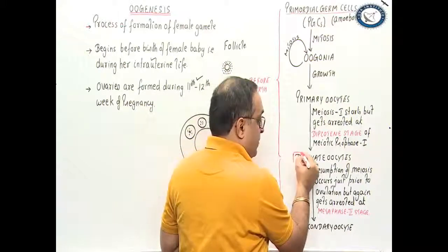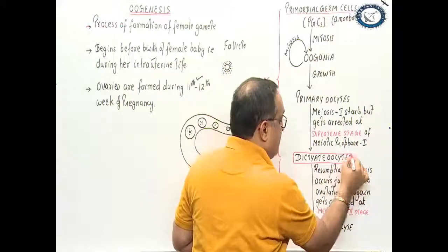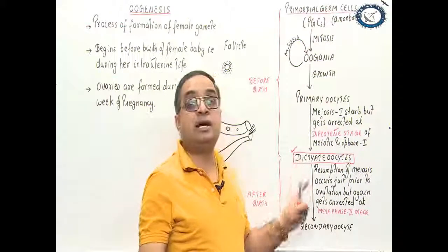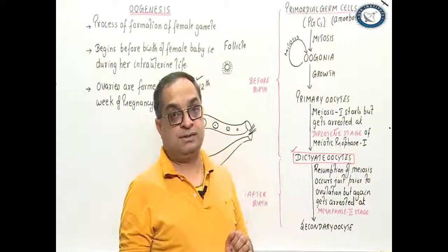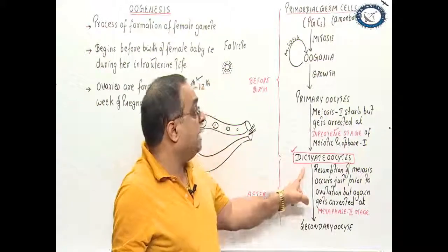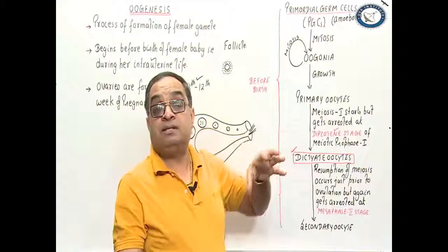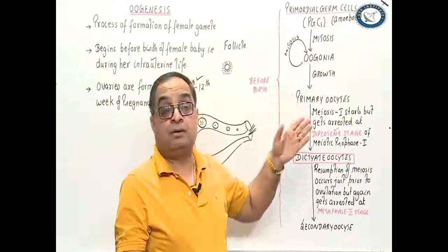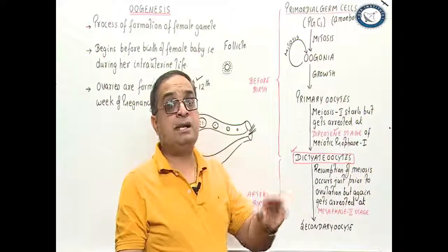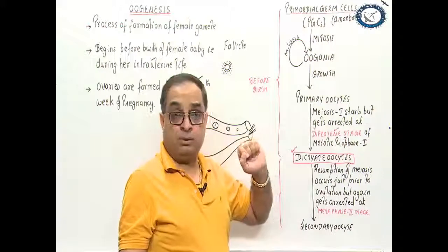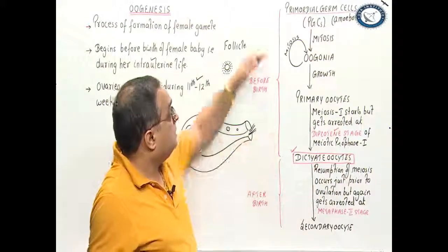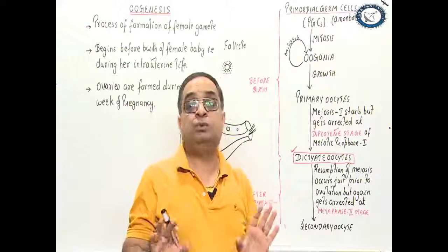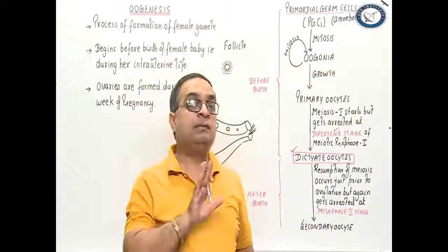There are lakhs and lakhs of oocytes in which meiosis has started but is arrested at the diplotene stage of meiotic prophase 1 — such oocytes are called dictyate oocytes. This is happening before birth, that is, when the female baby is inside the uterus of the mother. When a female baby is born, all the oocytes in both her ovaries are in the arrested diplotene stage and are called dictyate oocytes.